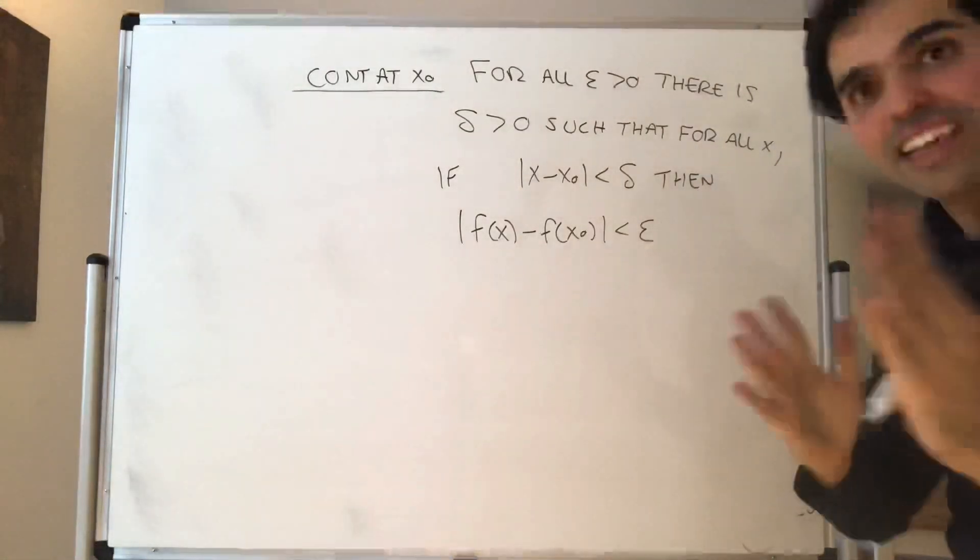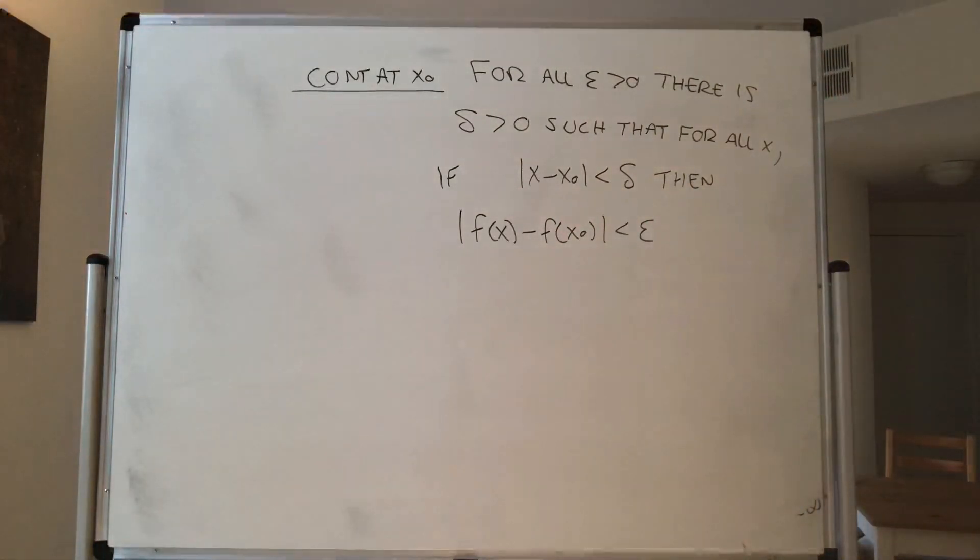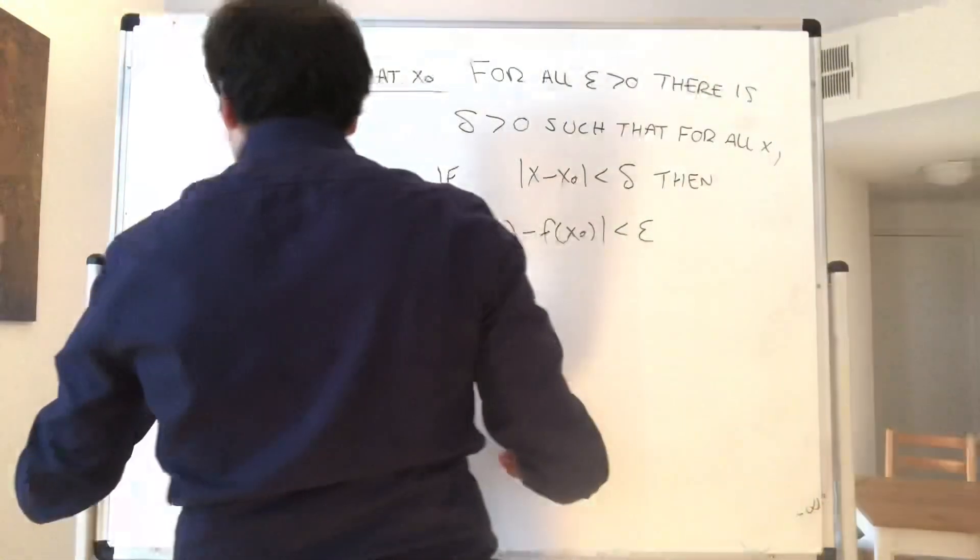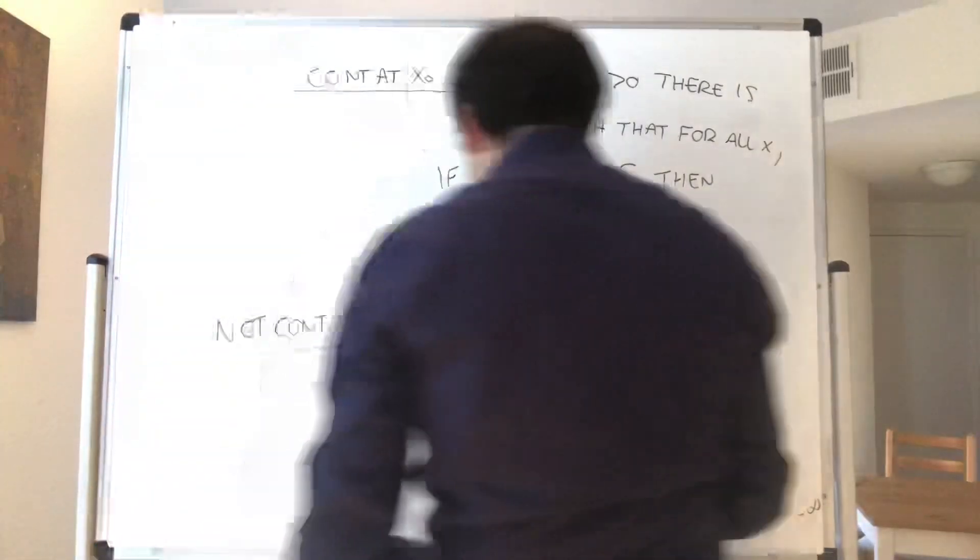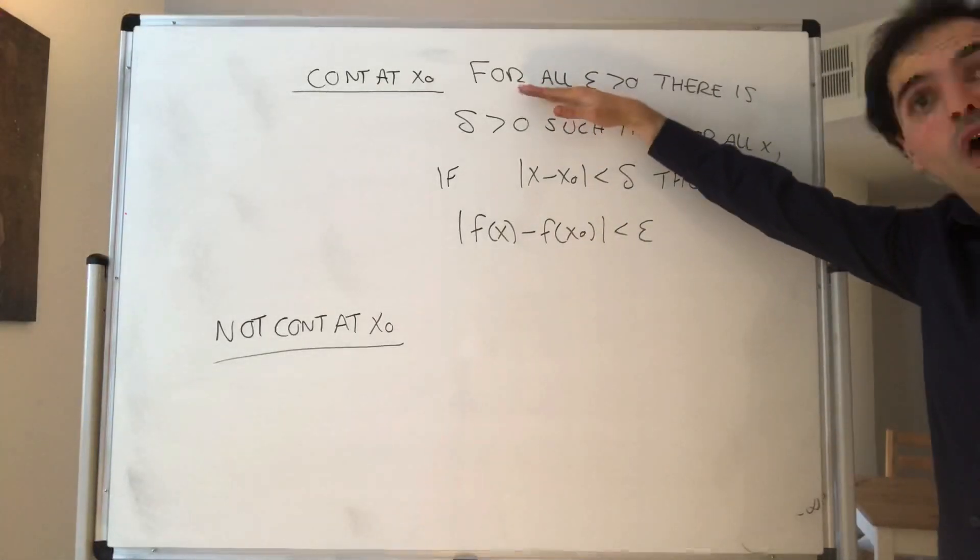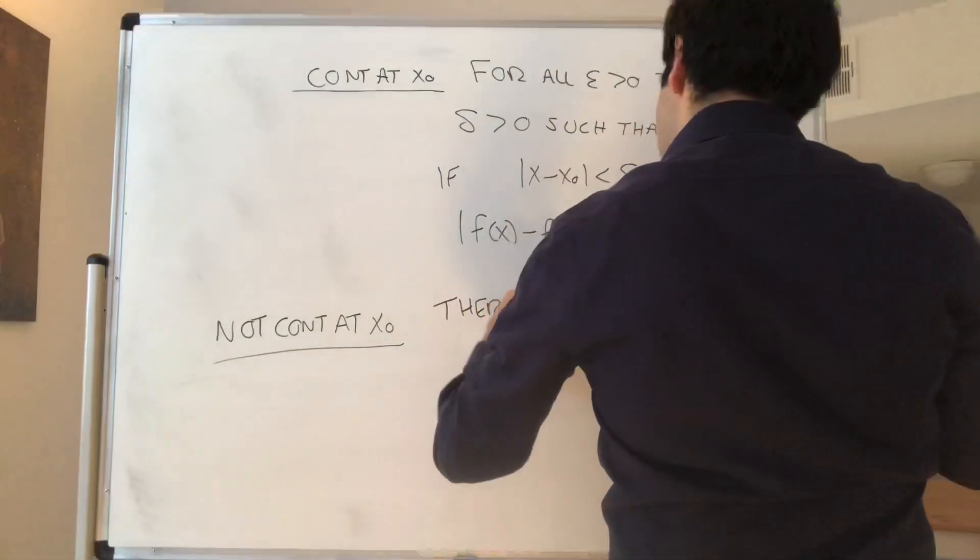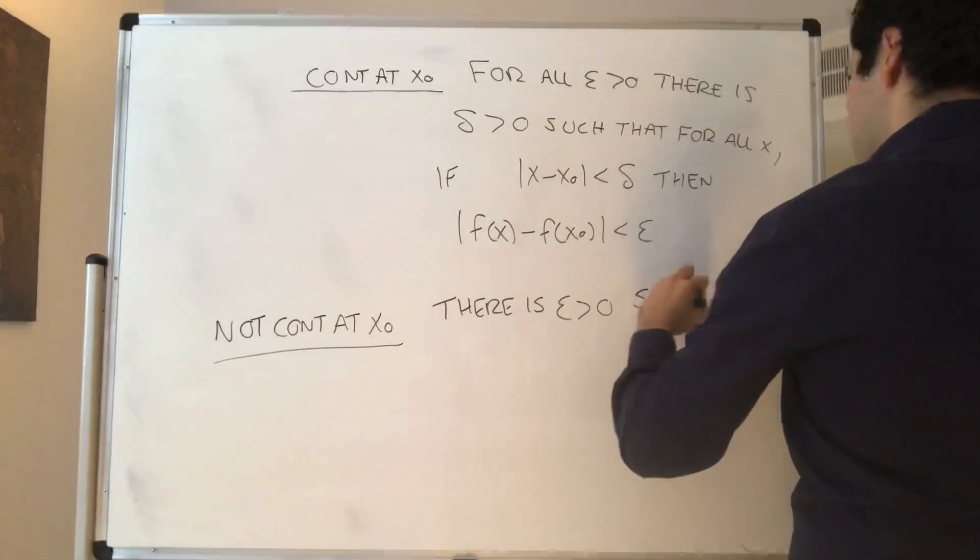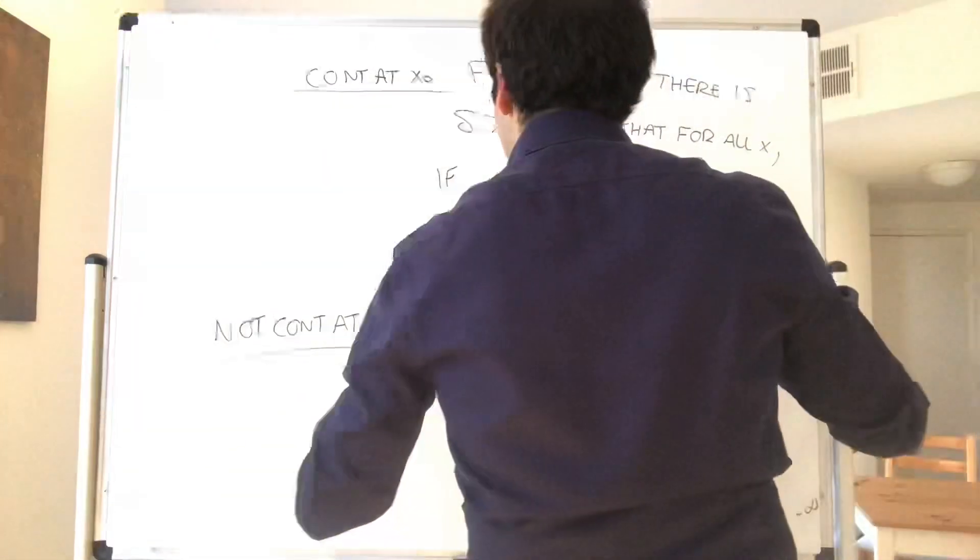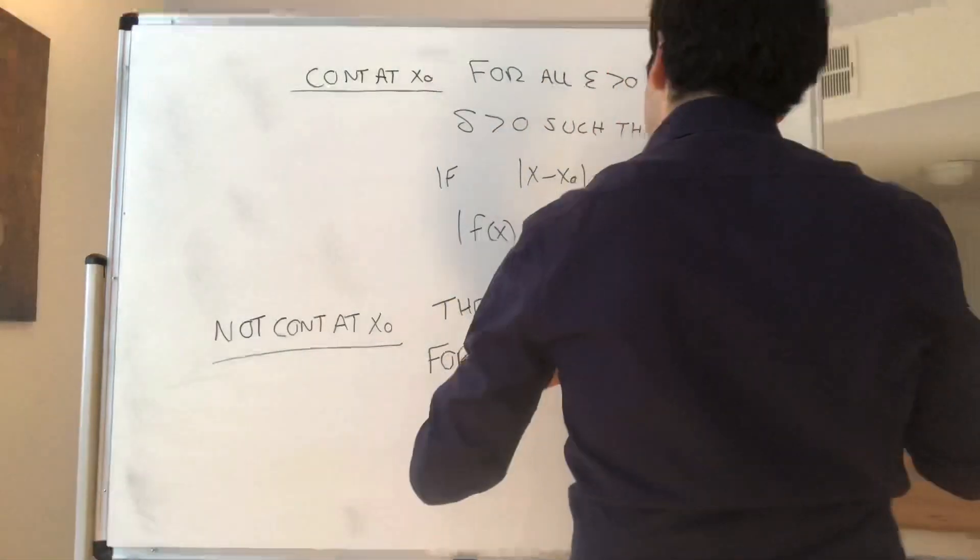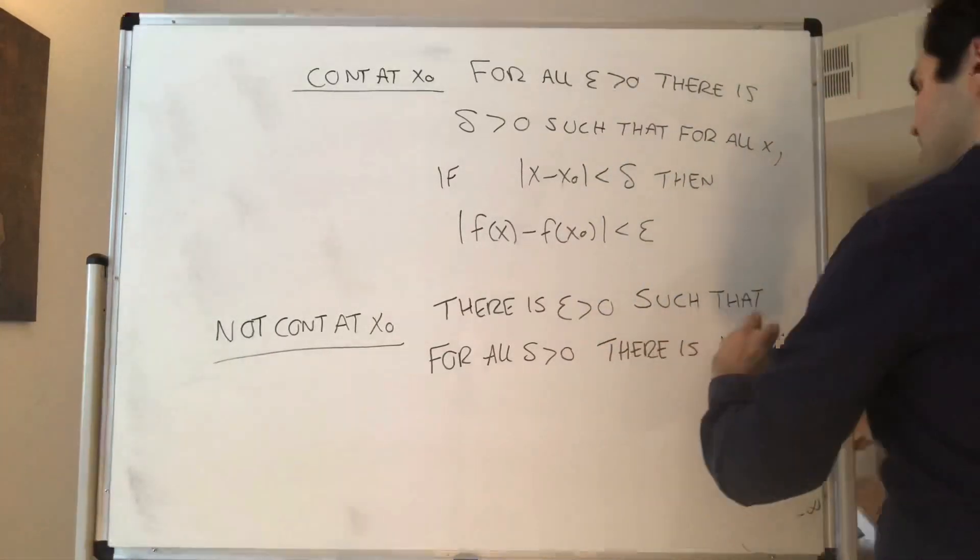And again, it's the same thing with the good region. If you're close enough to x0, then f of x is in the good region. And more interestingly, what is the negation of that? What does it mean to be not continuous at x0? Again, how do you negate a statement? You just replace for all with there exists. So there is some error epsilon positive such that, and the opposite of there is, is for all. So no matter how small the threshold, there is always some x.